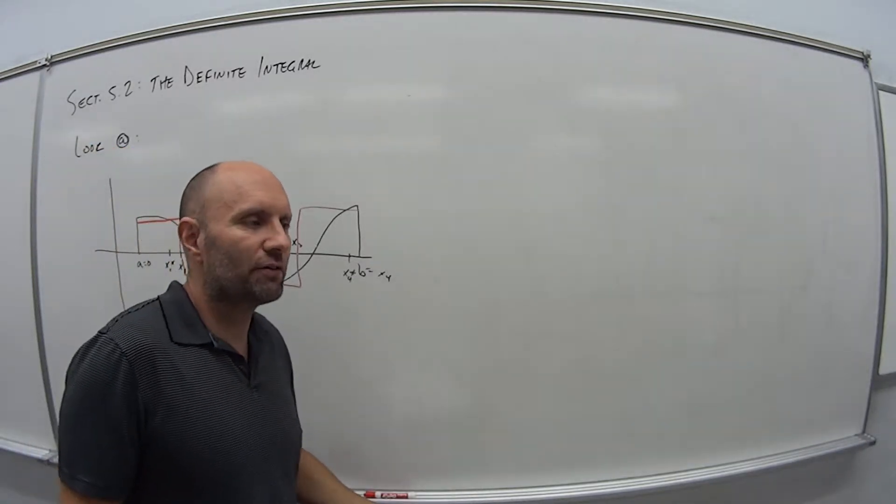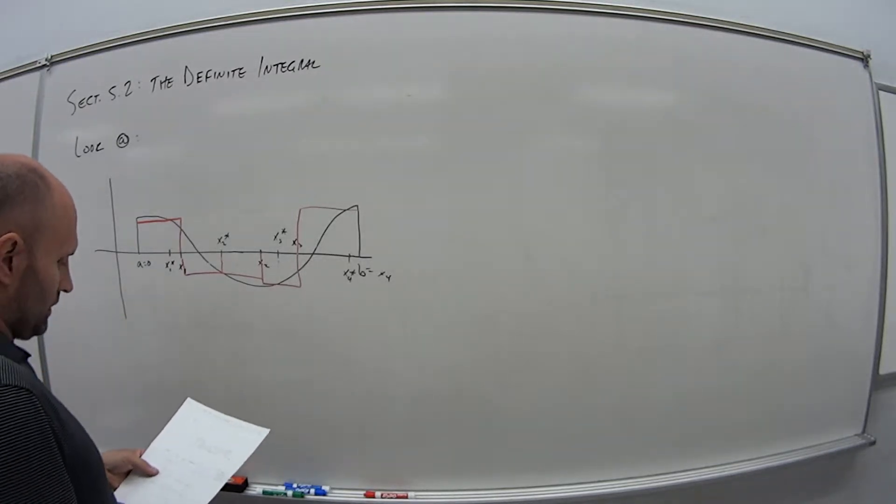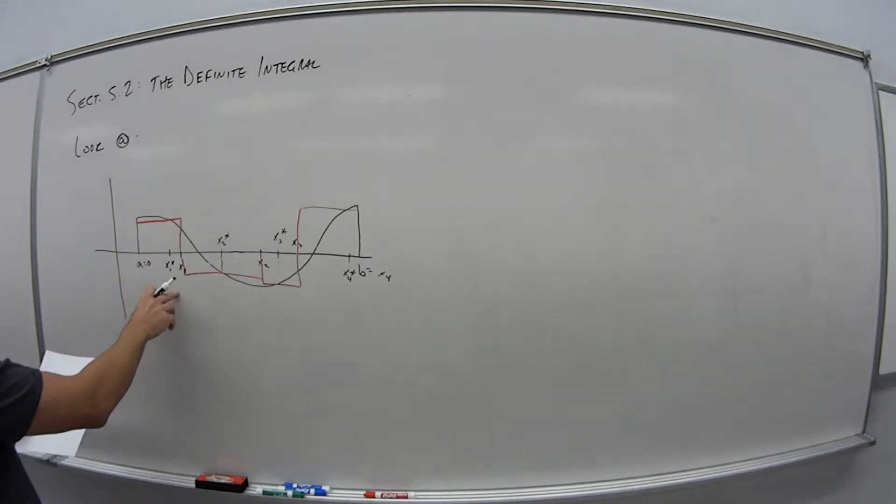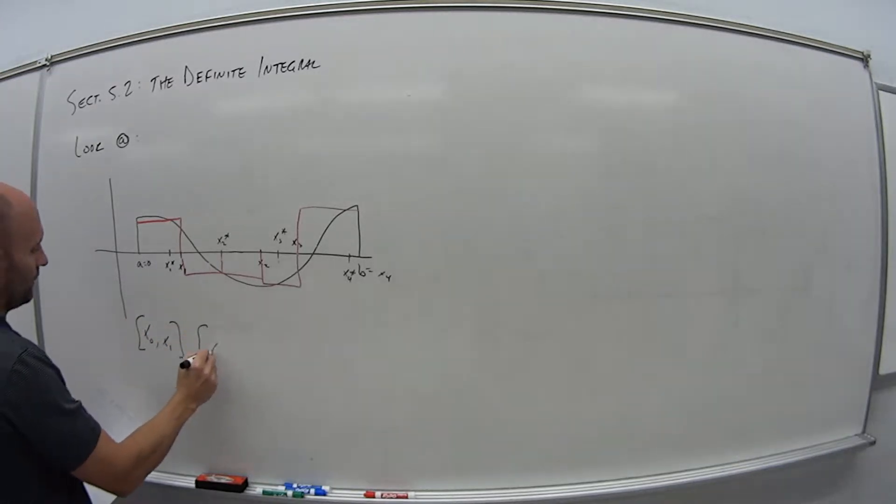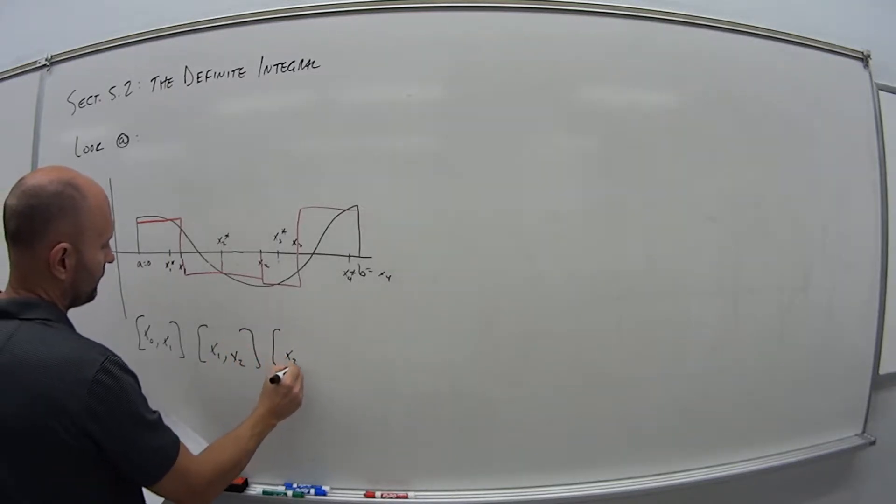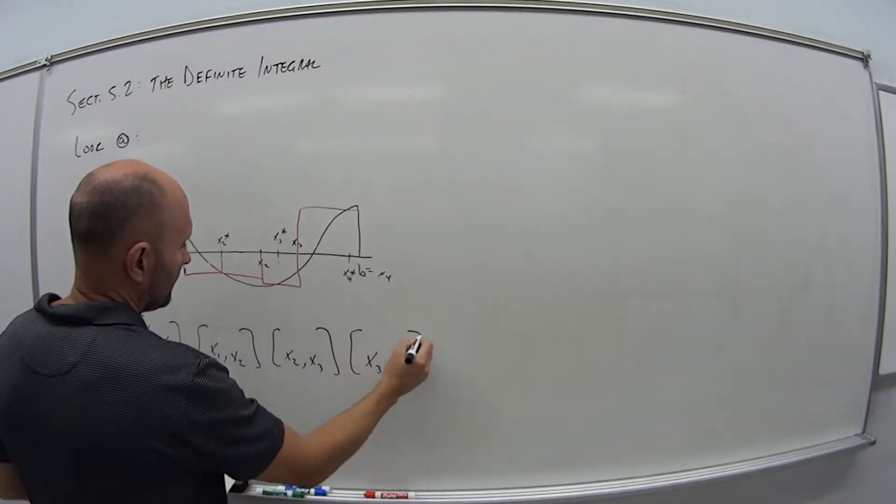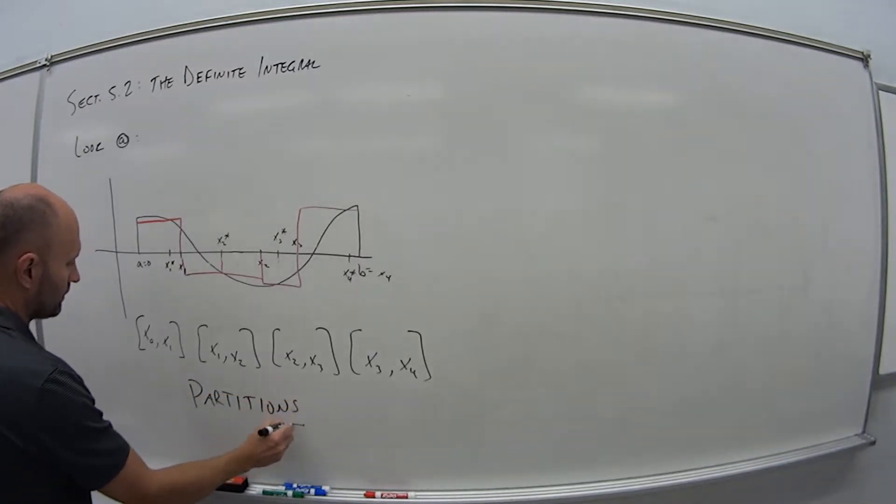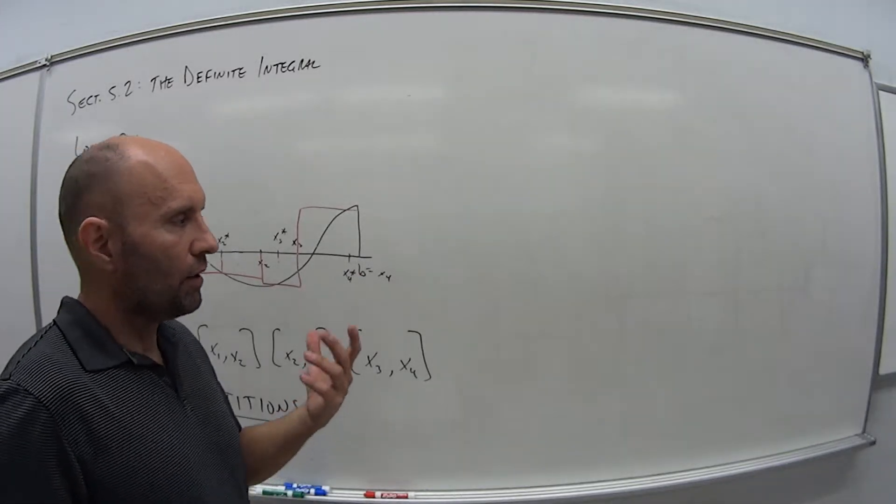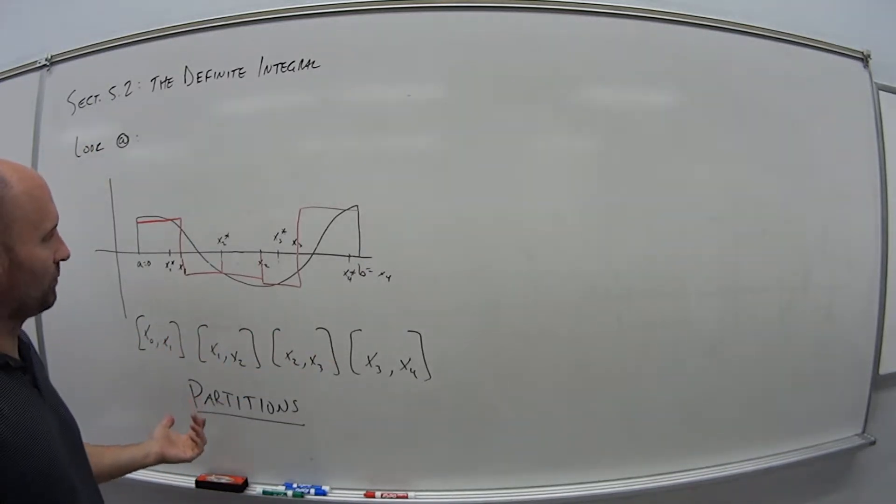So now we're getting a bunch of areas of rectangles that might have plus and minus values that if we add them all up together, are not going to give us just some straight positive value. So these specific areas, X0 to X1, X1 to X2, X2 to X3, X3 to X4, these are what are known as partitions. So we're partitioning the entire interval, A to B, into these separate intervals. And again, they don't necessarily have to be the same length.